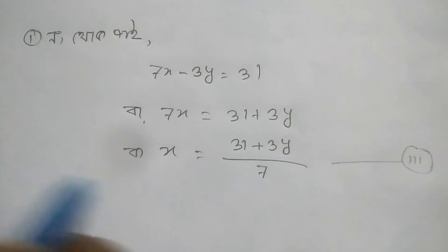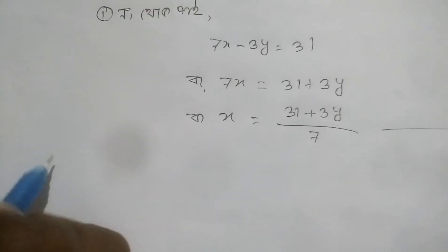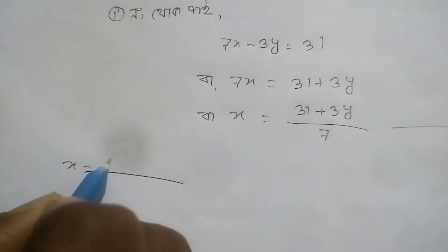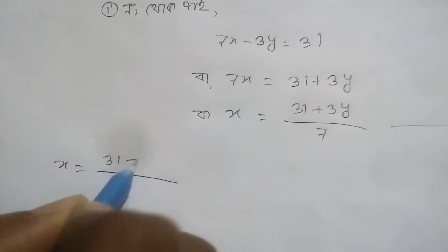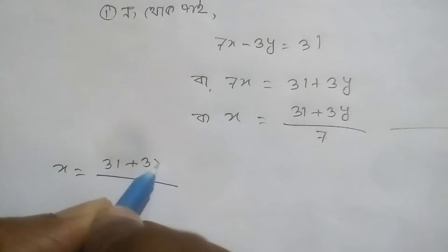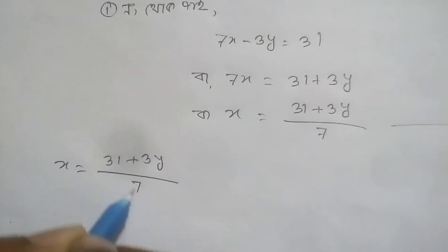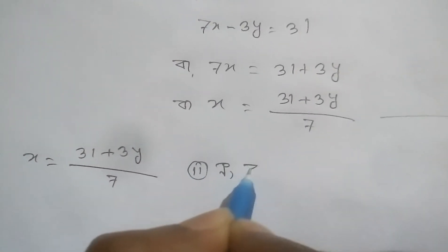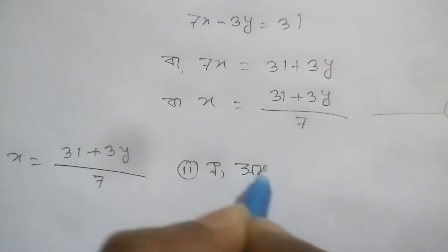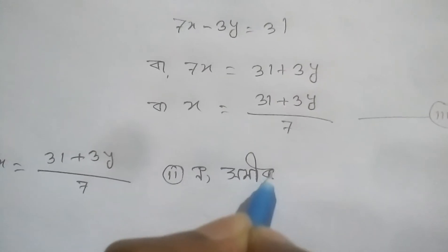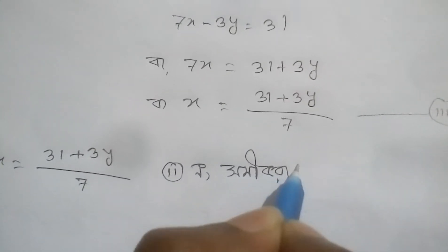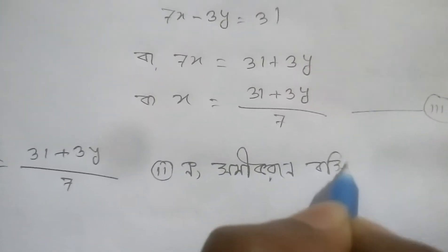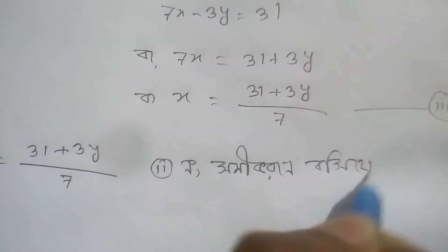I don't know how much we can do this. x equals to 31 plus 3y by 7. I can see.